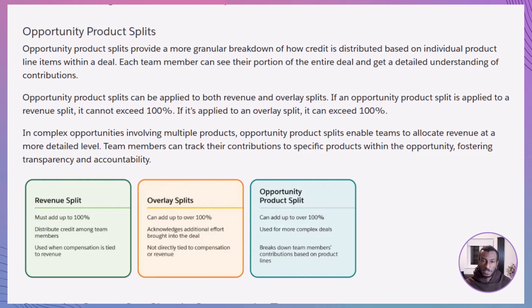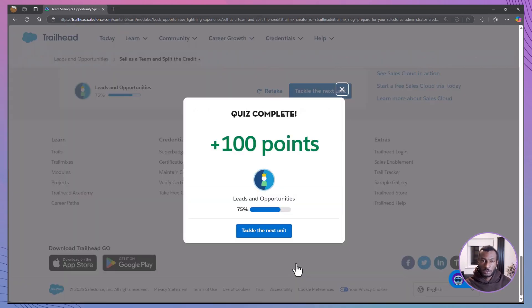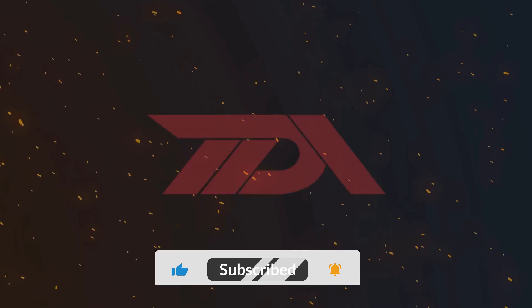To summarise, selling as a team and splitting credit effectively are vital skills in Salesforce. By understanding revenue splits, overlay splits, and opportunity product splits, you can acknowledge team contributions accurately and foster a collaborative sales environment. Opportunity teams help you bring together the right expertise for each deal, ensuring everyone gets the credit they deserve. If you enjoyed this tutorial or found it helpful, please give it a thumbs up, subscribe to The Declarative Academy, and leave any questions or comments below. Your feedback not only supports the channel but also helps tailor future content to your needs. Thanks for watching, and until next time, keep collaborating and happy selling. Cheers!